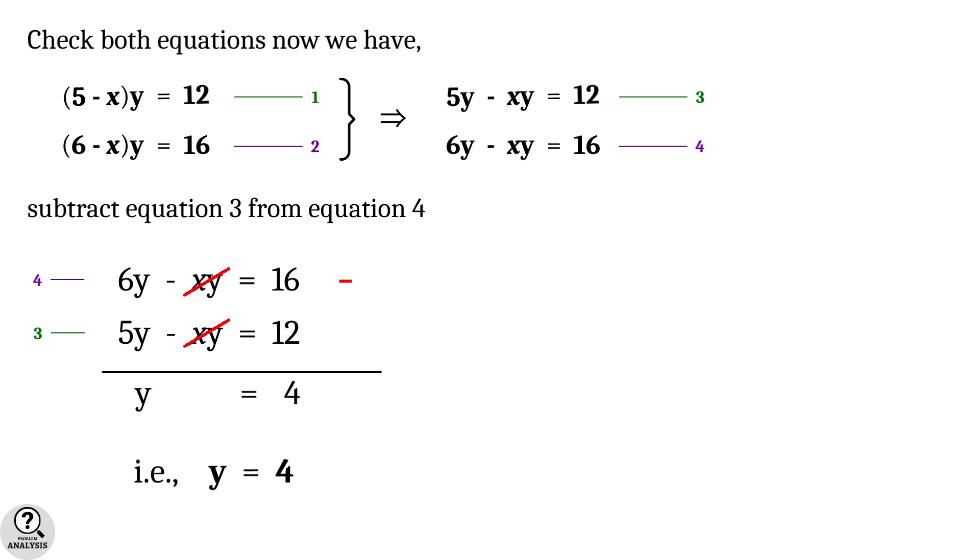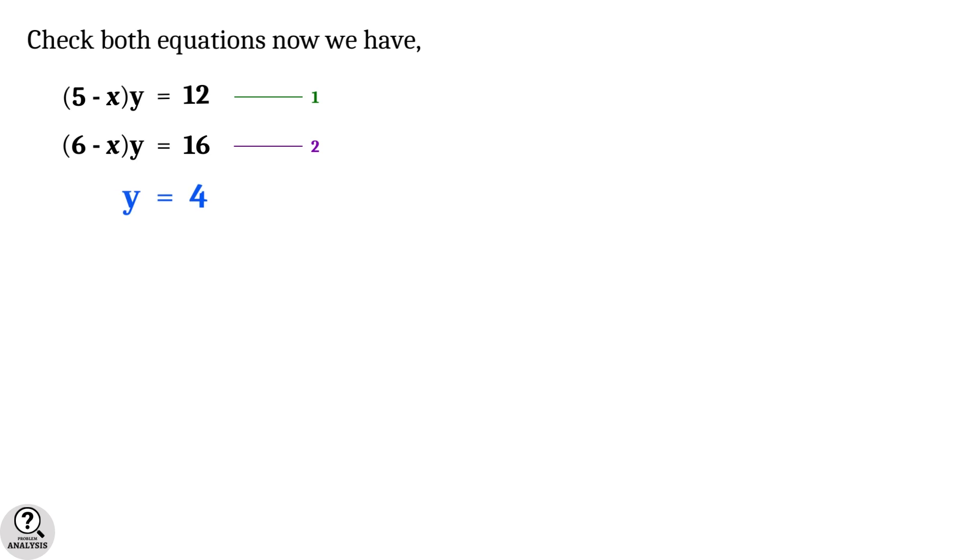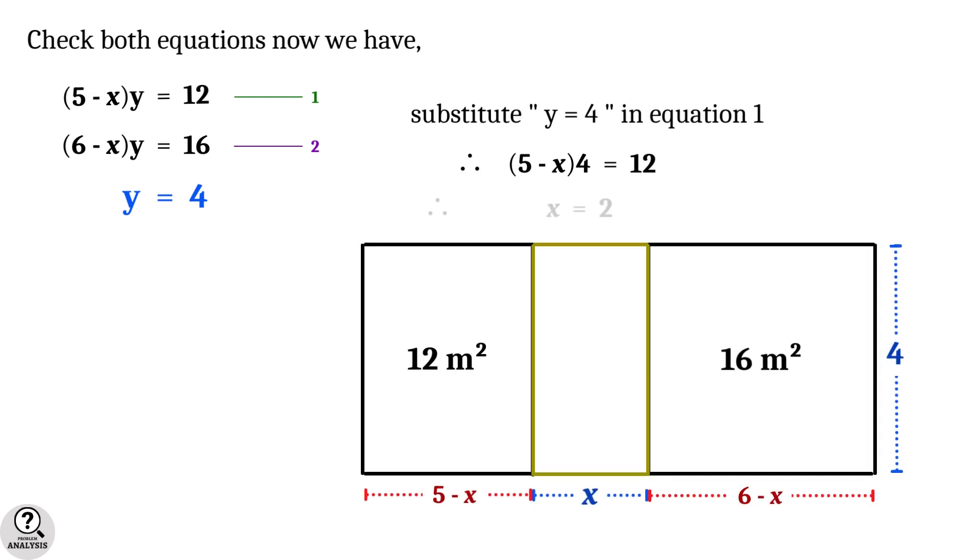Which means the height of all the rectangles is 4 meters. Now we can substitute y equal to 4 in any of the equations 1 and 2. I am substituting in equation 1, so (5 minus x) into 4 equal to 12, which gives x equal to 2.